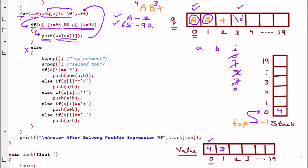i increments to 1. q[1] is B, also an alphabet. Again we call push(value[i]) — value[1] is 3, so 3 is pushed onto the stack. Top is now 1. The else part does not run since we matched the if condition.